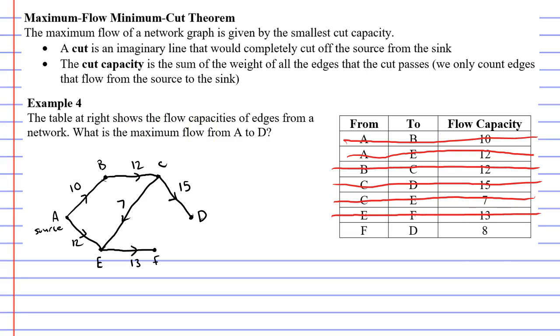Anyway, we'll do our last one now. From F to D has a flow capacity of 8. So from F to D, F to D has a flow capacity of 8. So that's our table finished with. We've got our diagram.